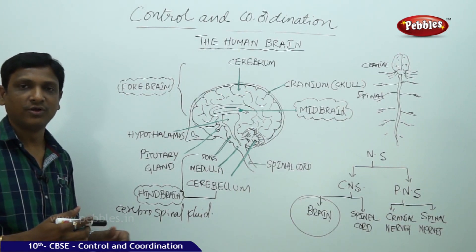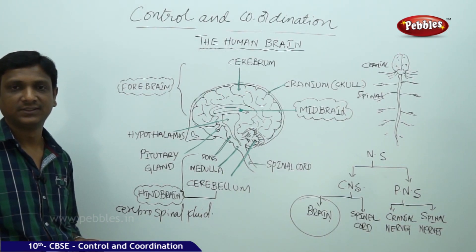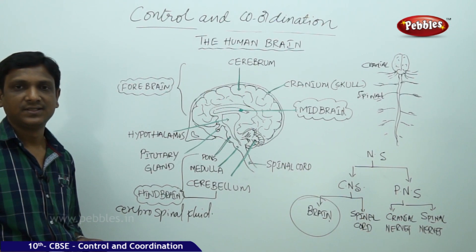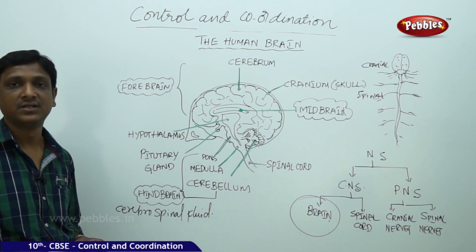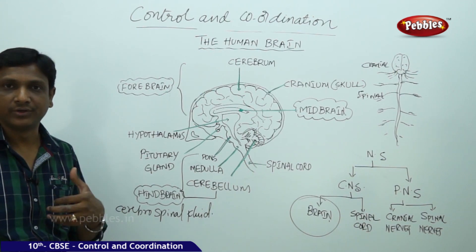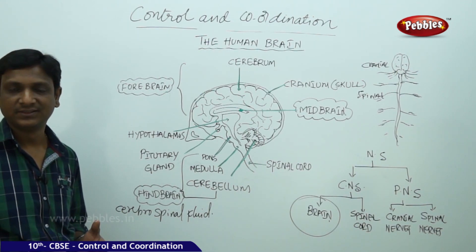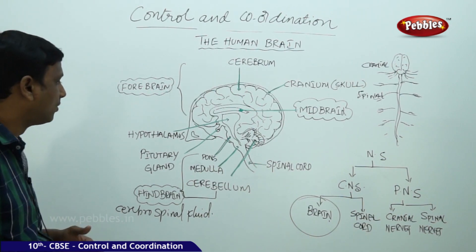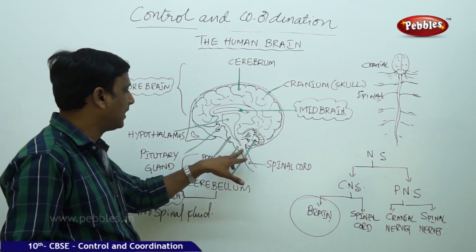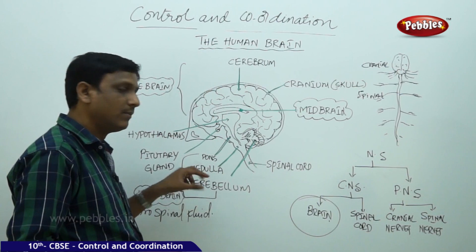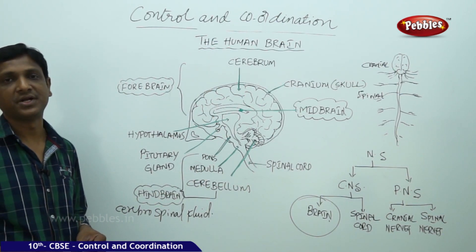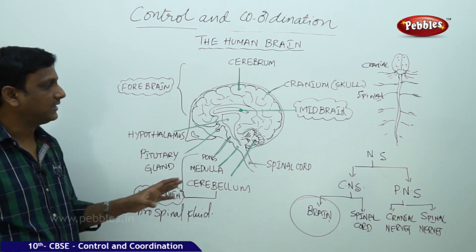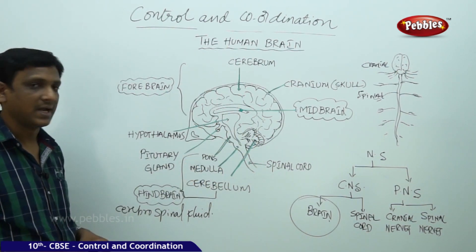Certain activities such as control of blood pressure, salivation, and vomiting are controlled by the medulla, which is a part of the hindbrain. If something goes wrong in your throat, you vomit — that is controlled by the medulla. All these involuntary functions are controlled by the midbrain and hindbrain.